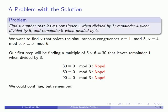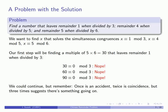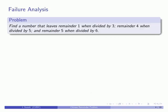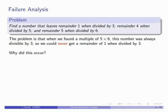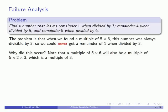Once is an accident, twice is coincidence, but three times suggests there's actually something going on. Let's analyze our failure. The problem is that when we found these multiples of 5 times 6, this number was always divisible by 3, so we could never get a remainder of 1 when divided by 3. Why did this happen? A multiple of 5 times 6 — since 6 is 2 times 3 — is also a multiple of 3, and so this will always leave a remainder of 0 when divided by 3.